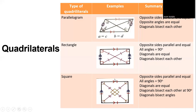A square has opposite sides that are parallel and equal, all angles equal to 90 degrees, equal diagonals, diagonals that bisect each other at 90 degrees, and diagonals that bisect the angles.